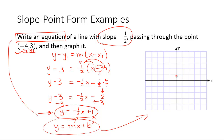To graph it, we start at the y-intercept of 1. We can travel down 1 and right 2, as previously explained, or up 1 and left 2.